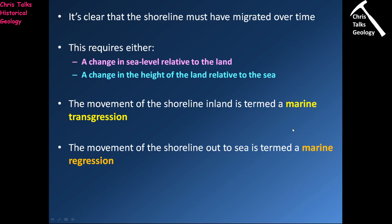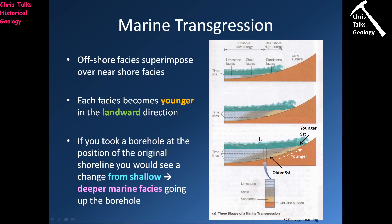In a marine transgression, offshore facies — the continental shelf facies — are going to superimpose themselves over nearer-shore facies. As sea level begins to rise, the coastline moves inland. The sand facies migrates inland, then the mud facies follows, and the carbonate facies follows the mud facies. We can already see mud facies superimposing themselves over sandstone facies, and carbonate facies superimposing themselves over mud facies — these offshore facies superimposing over the near-shore sandstones.